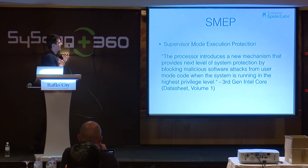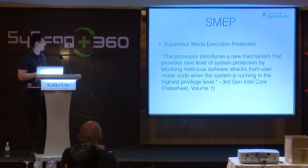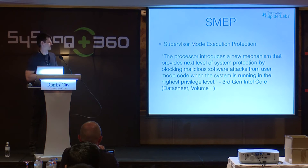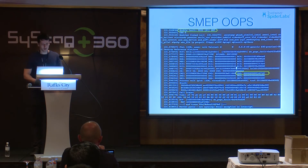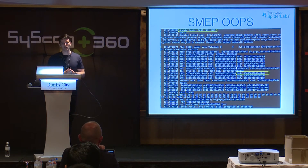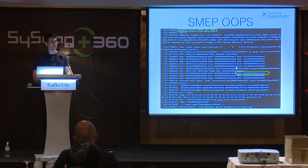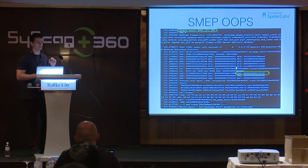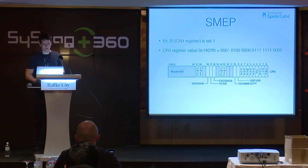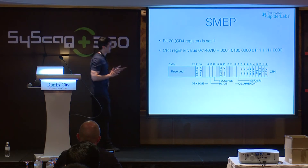What SMEP does — taken from the Intel data sheet Volume 1: 'The processor introduces a new mechanism that provides a next level of system protection by blocking malicious software attacks from user mode code when the system is running in the highest privilege level.' That's what that oops message shows. You get a double fault as the reason, and if you look at the CR4 register, you see the value 0x140x7F0 in hex. If the SMEP bit in CR4 is 1, instructions may not be fetched from any user mode address.